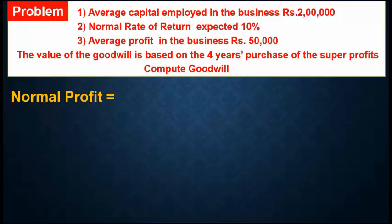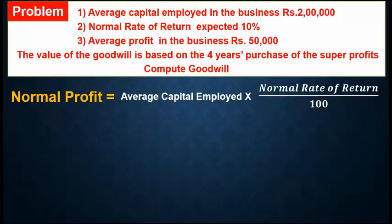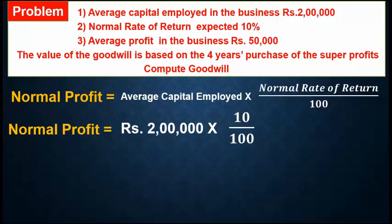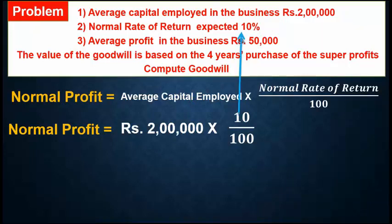First, calculate the normal profit. Formula: Average capital employed × Normal rate of return ÷ 100. The capital employed is rupees 2 lakh and the normal rate of return is 10%. So: 2,00,000 × 10 ÷ 100 = rupees 20,000. This is the normal profit.